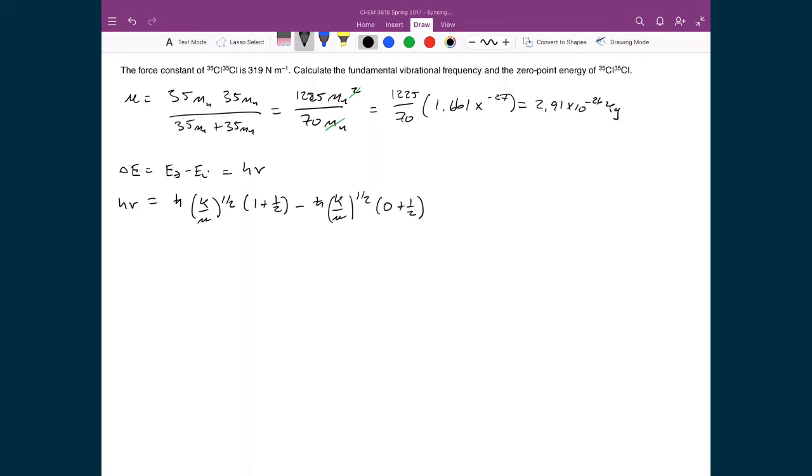I can simplify in a couple ways. First, I'm going to distribute out all these constants, so I have h-bar times square root of k over mu for both terms. I'm also going to change h-bar into h over 2π. So I have h over 2π times square root of k over mu times (3/2 minus 1/2), which just gives me 1.